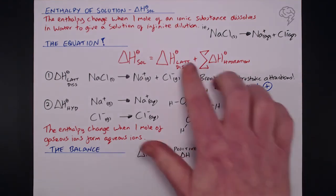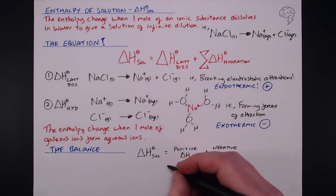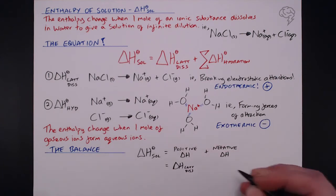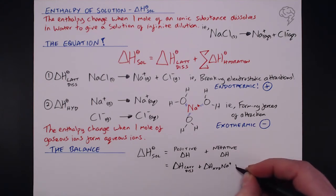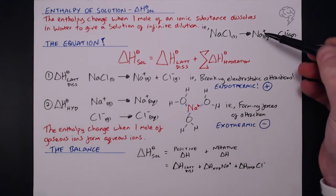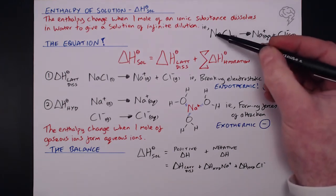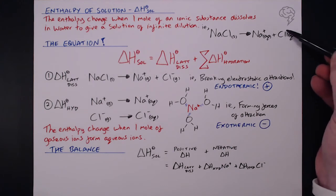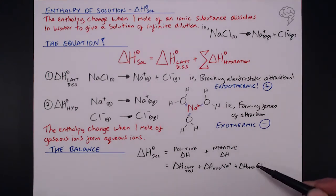So delta H solution is a balance between a positive delta H and a negative delta H. So for this example here, delta H solution will equal delta H lattice dissociation of sodium chloride, plus the delta H hydration of our sodium ions, plus the delta H hydration of our chloride ions. You must include both. And if there's more than one ion form, let's see if it's MgCl2, you need to account for the fact there are two chloride ions here, so this would be two times.